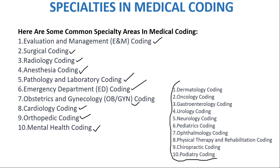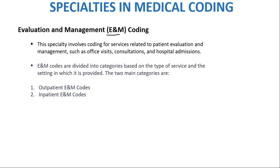The specific specialties available may vary based on the healthcare setting and the specific needs of the organization. Evaluation and Management (E&M) coding involves coding for services related to patient evaluation and management, such as office visits, consultations, and hospital admissions. E&M codes are divided into categories based on the type of service and the setting. The two main categories are: outpatient E&M codes and inpatient E&M codes.